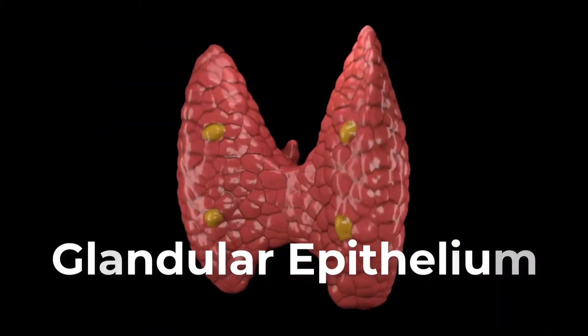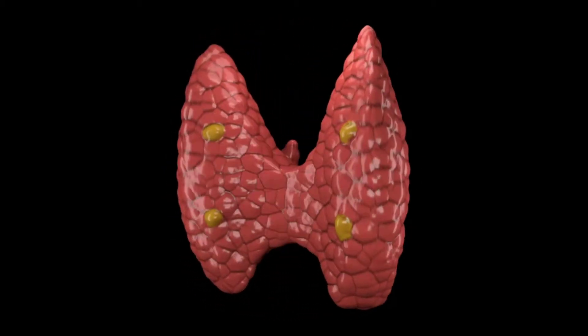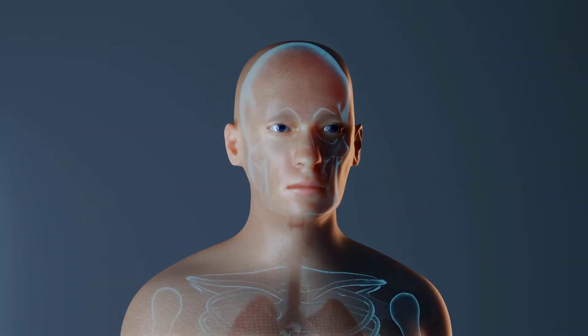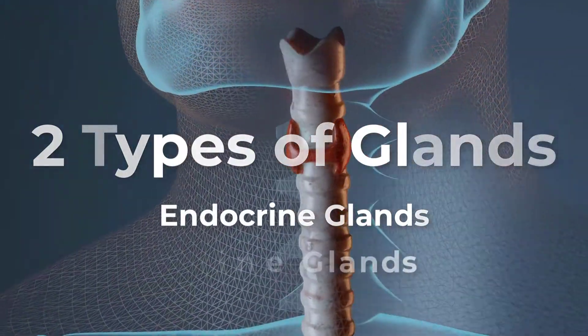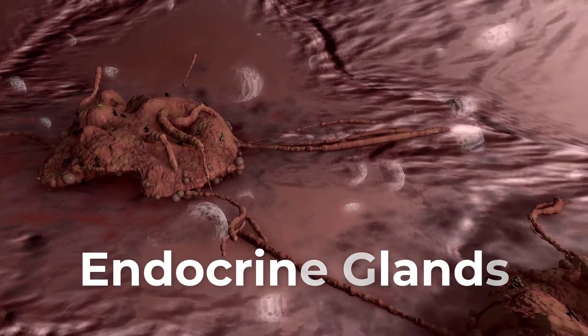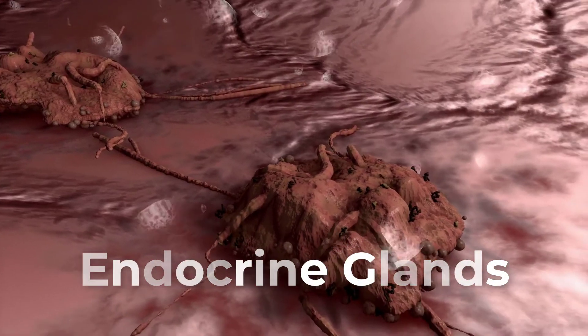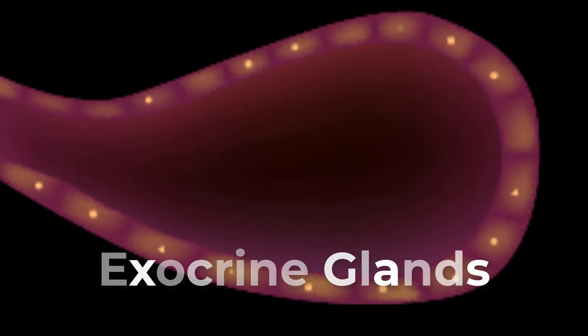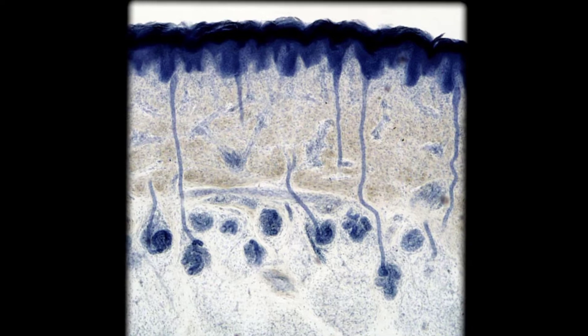Glandular epithelium. A gland is a structure made up of one or more cells modified to synthesize and secrete chemical substances. Most glands consist of groups of epithelial cells. A gland can be classified as an endocrine gland or an exocrine gland.